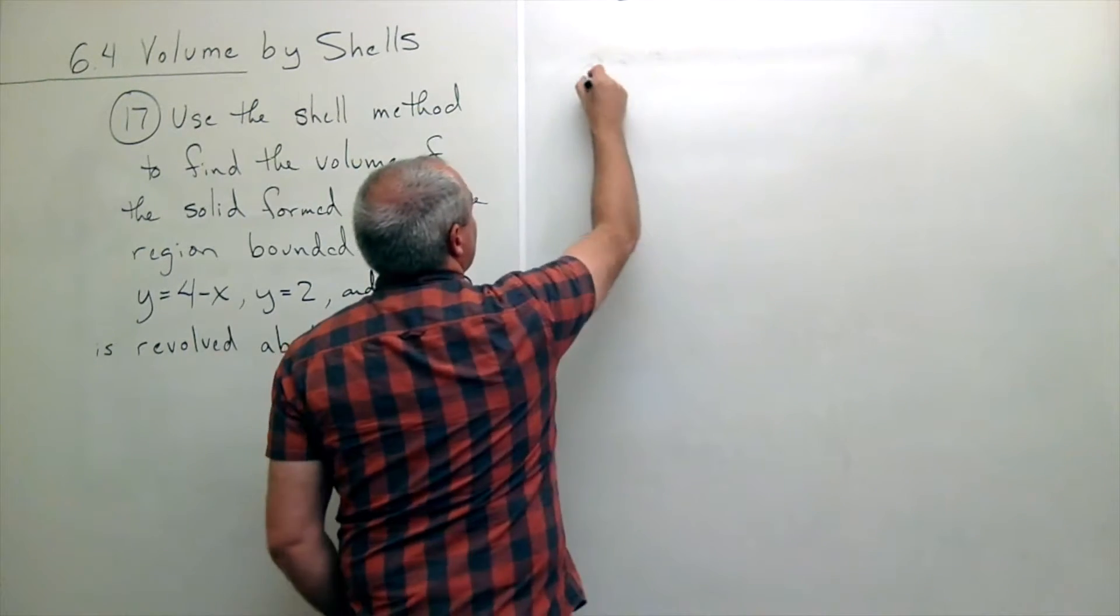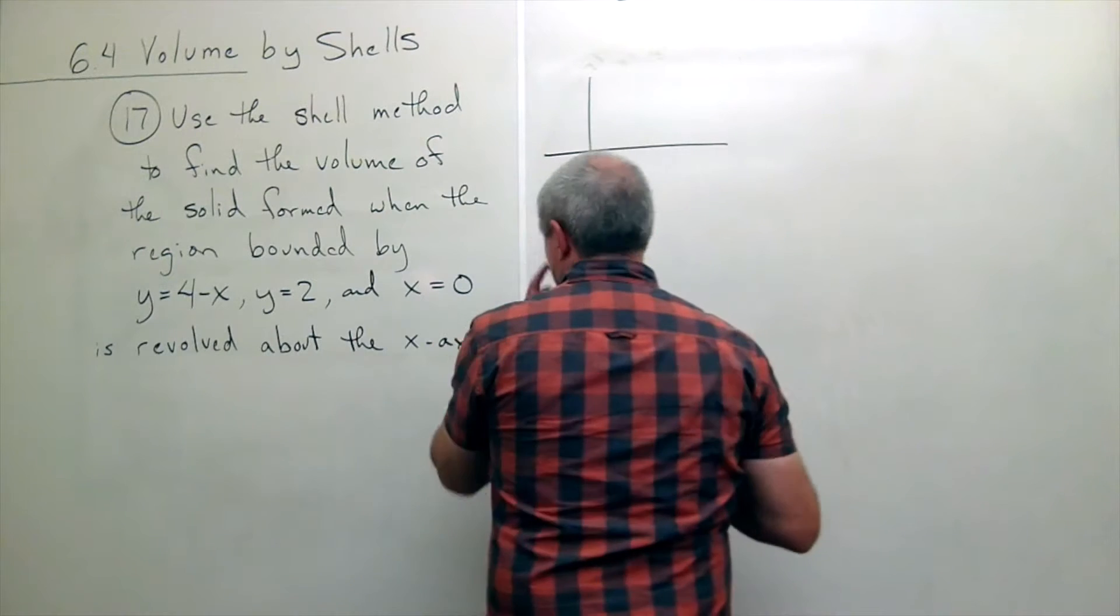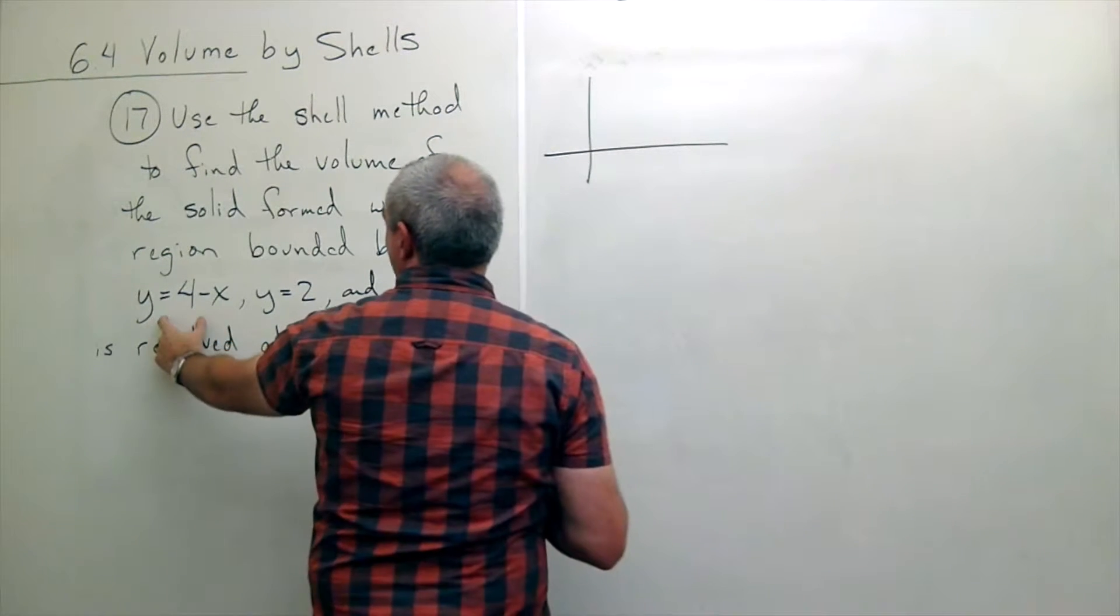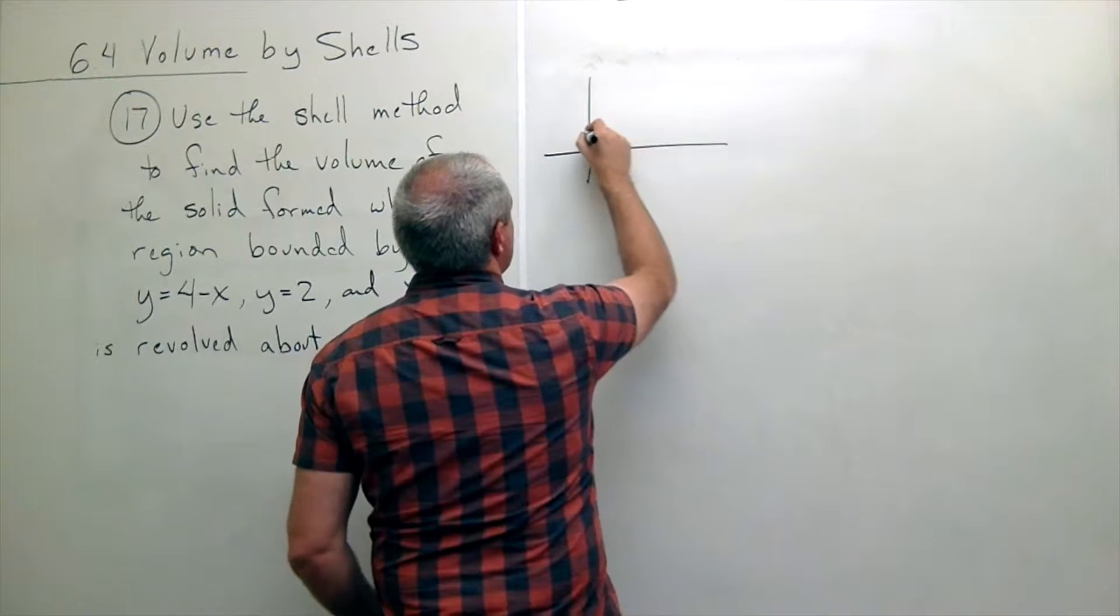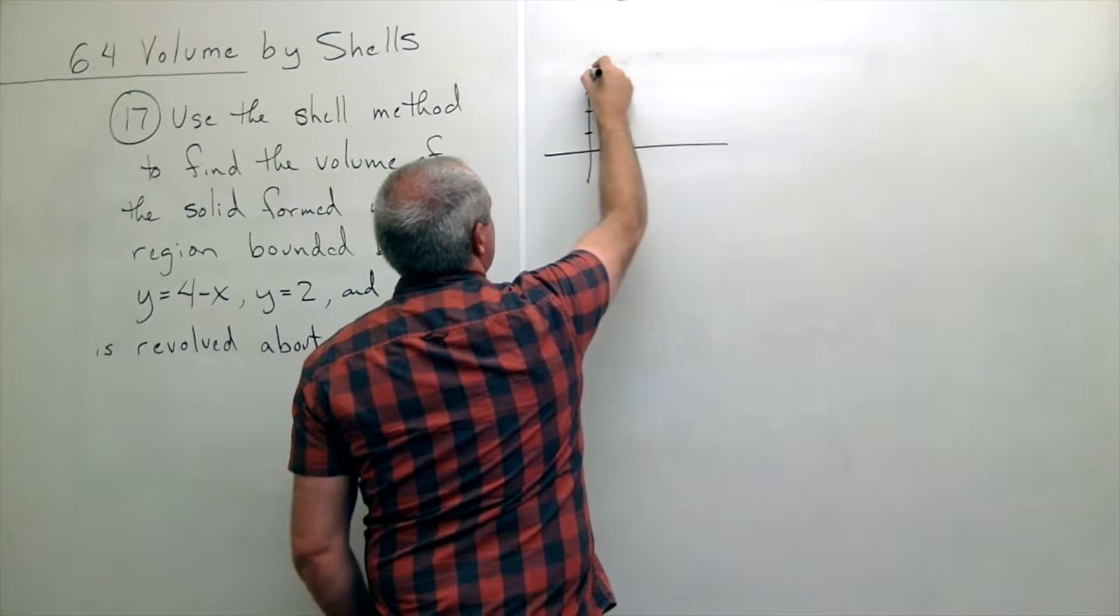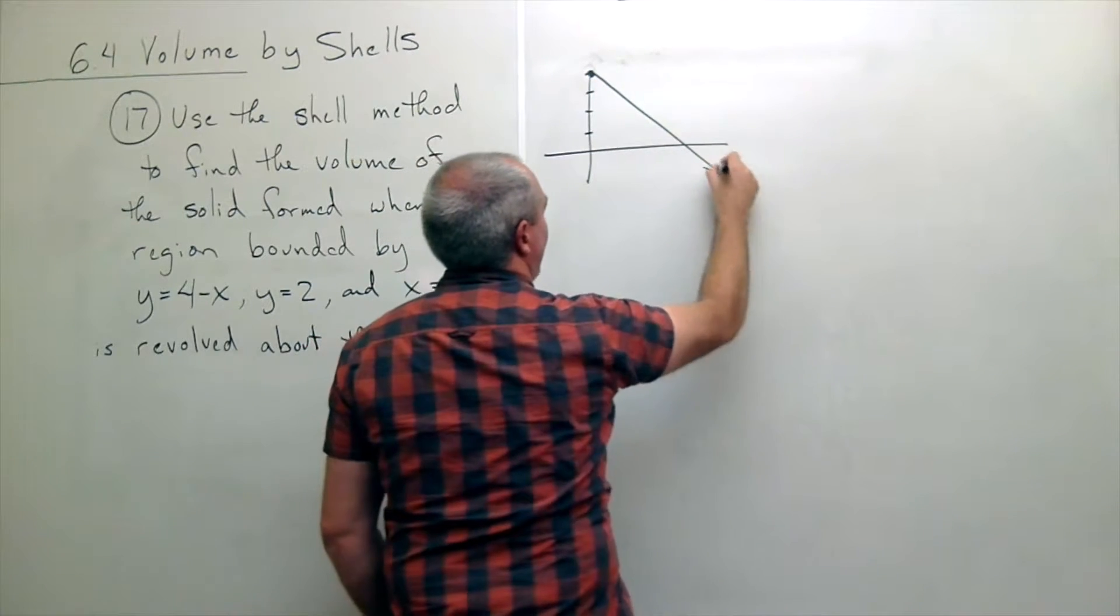So let's start out by drawing this region that we're going to spin. I get y equals four minus x, which has a y-intercept of four and a slope of negative x,